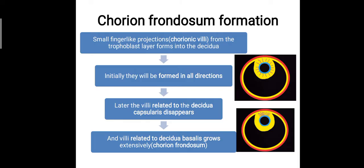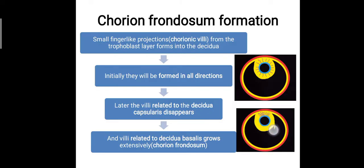For chorion frondosum formation, initially small finger-like projections from the trophoblast layer of the embryo develop into the decidua in all directions. Later, the villi related to the decidua capsularis will disappear. As you can see in this image, there are no chorionic villi in the decidua capsularis region — they disappear from that side and extensively develop in the decidua basalis area. The chorionic villi that extensively develop in the area of the decidua basalis are termed the chorion frondosum.